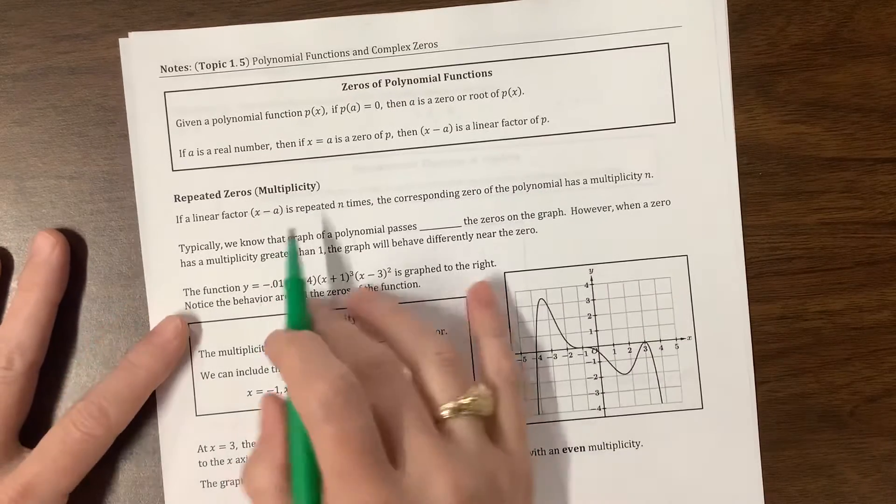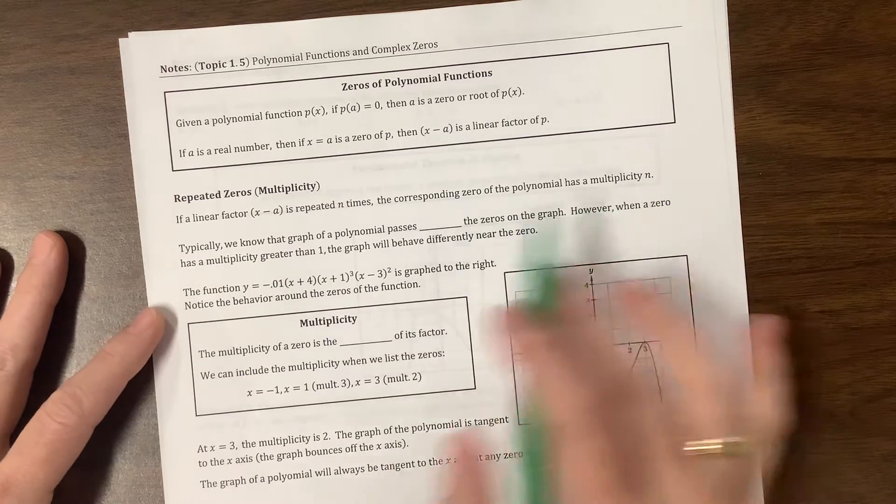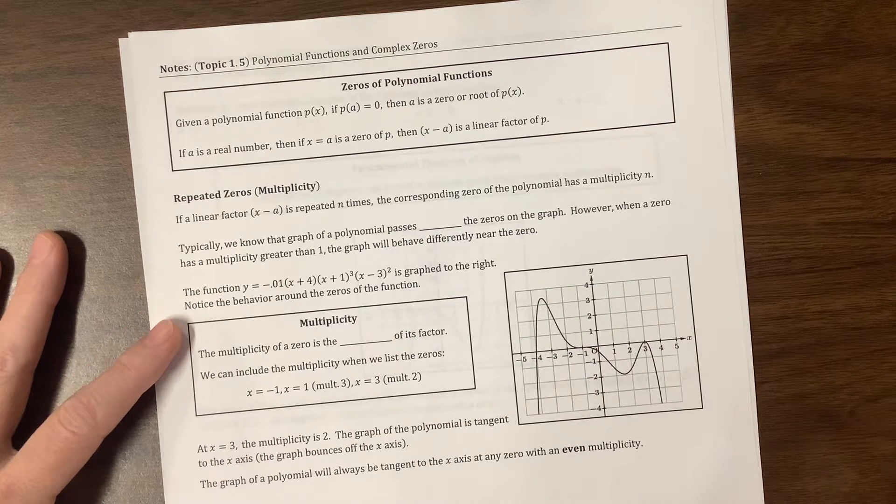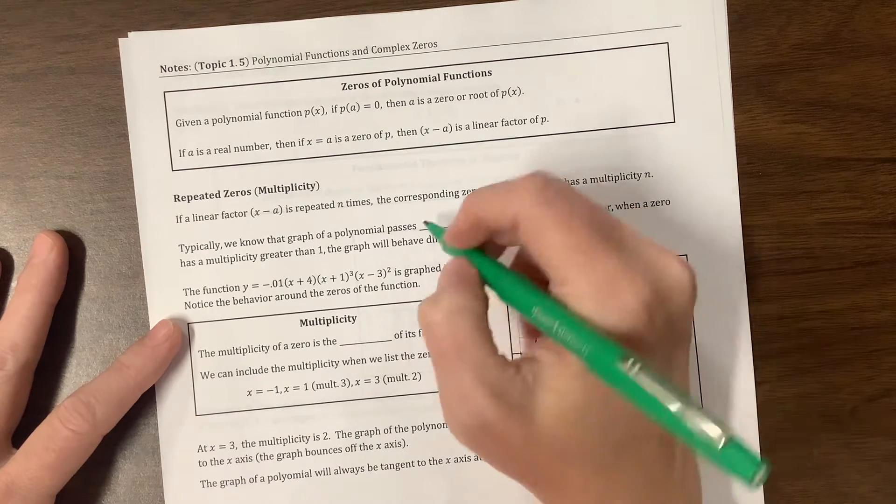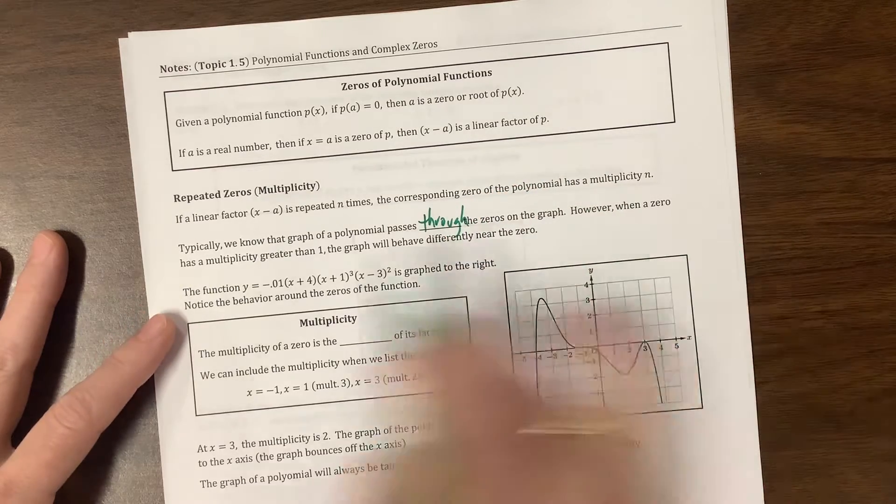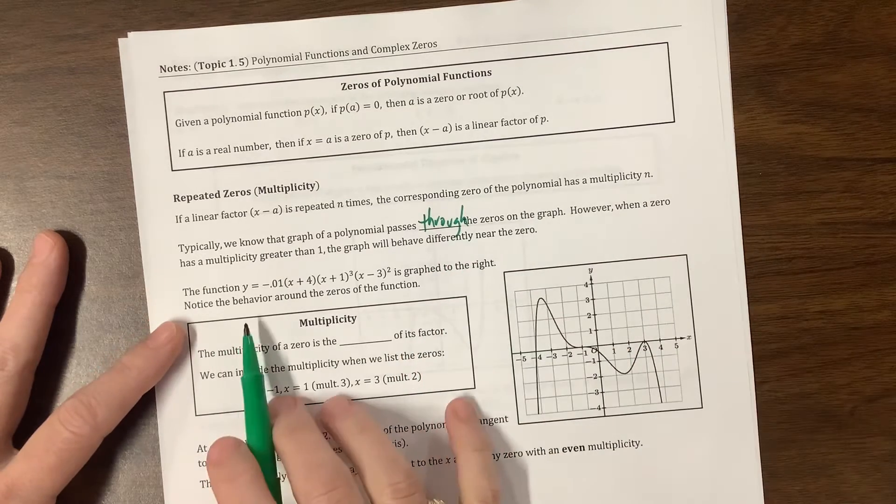If a linear factor is repeated n times in the corresponding zero, the polynomial has a multiplicity of n. Typically, we know that the graph of a polynomial passes through the zeros of the graph. However, when a zero has a multiplicity greater than 1, the graph will behave differently near the zero.